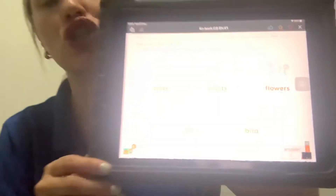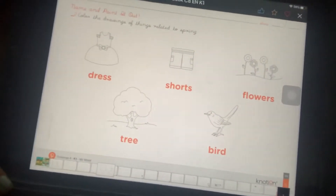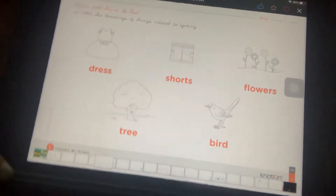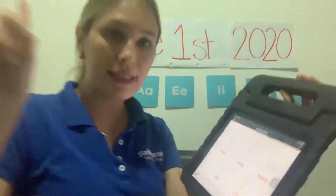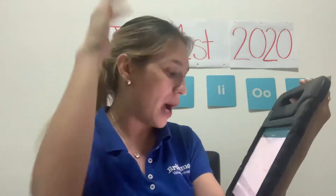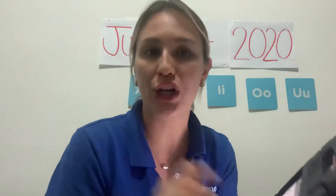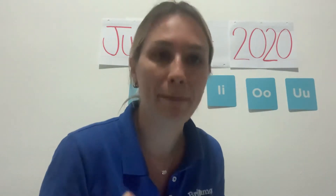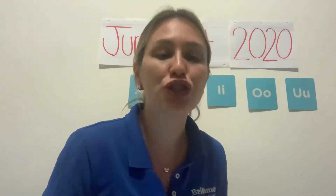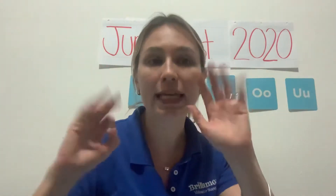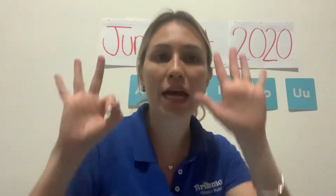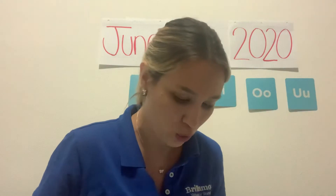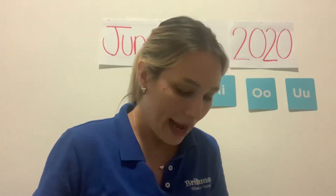You're going to color all the pictures because all the pictures show things you can do in spring: the dress, the shorts, the flowers, the trees, and the bird. You're going to color the whole page — page number eight in your Notion book.